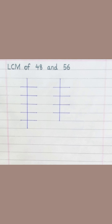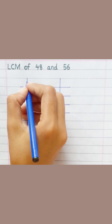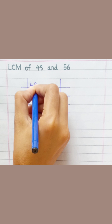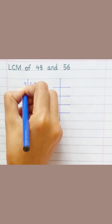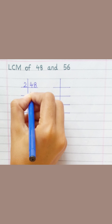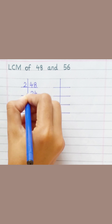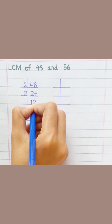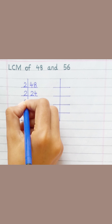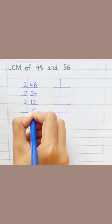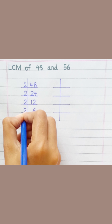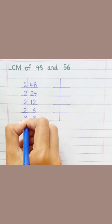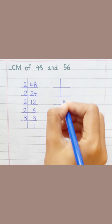LCM of 48 and 56. 48: two twos are four, two fours are eight. Two ones are two, two twos are four. Two sixes are twelve. Two threes are six. Three ones are three.